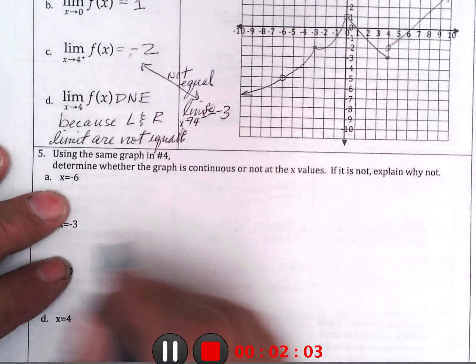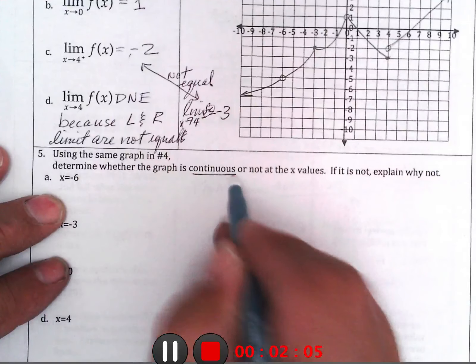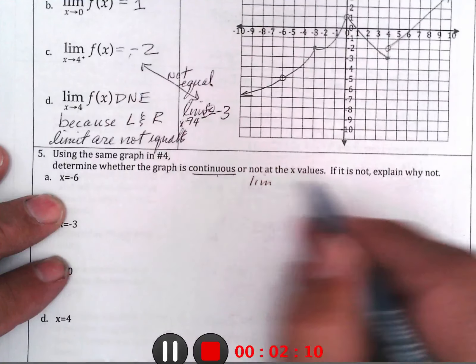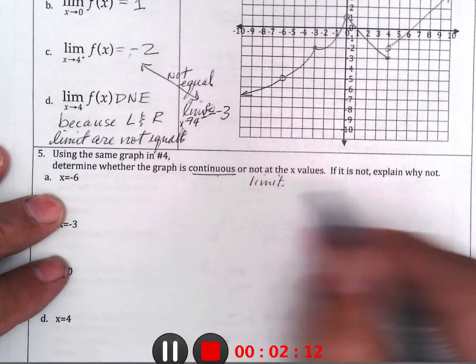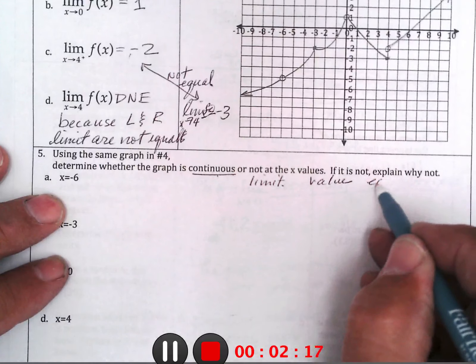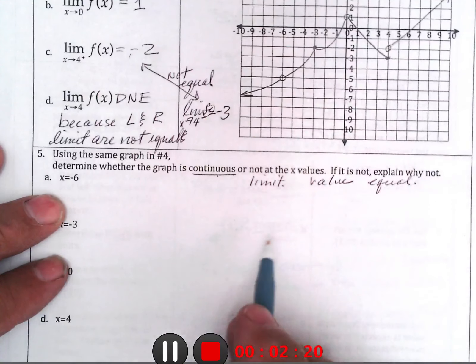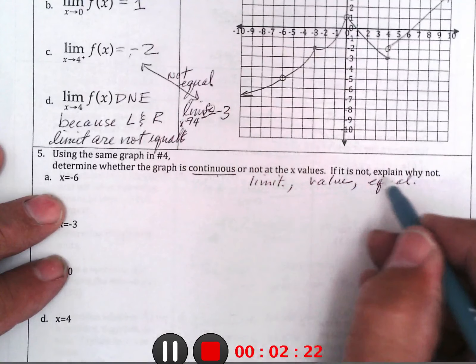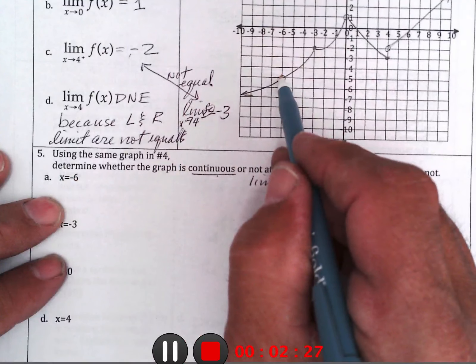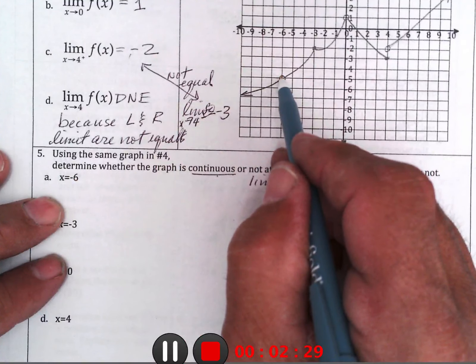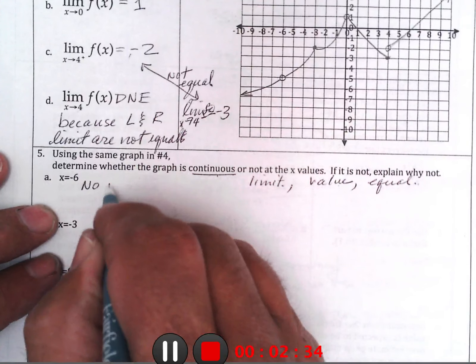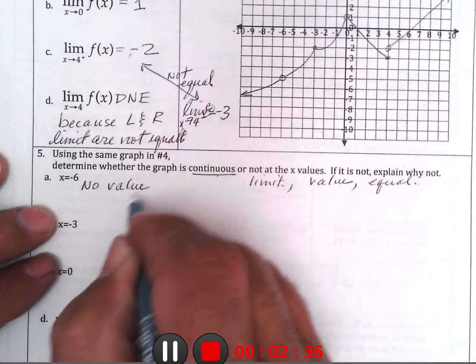Those are, have a limit, have a value, and they have to be equal. The limit and the value. So, x equals negative 6. At negative 6, this curve does not have a value. So, not continuous.